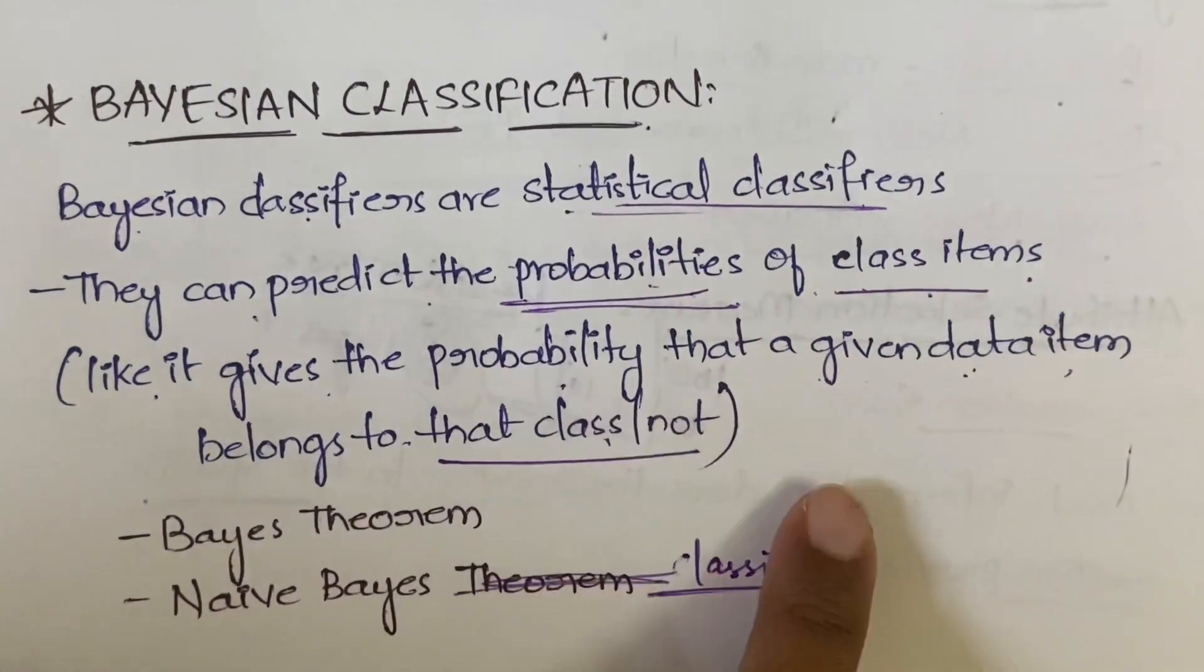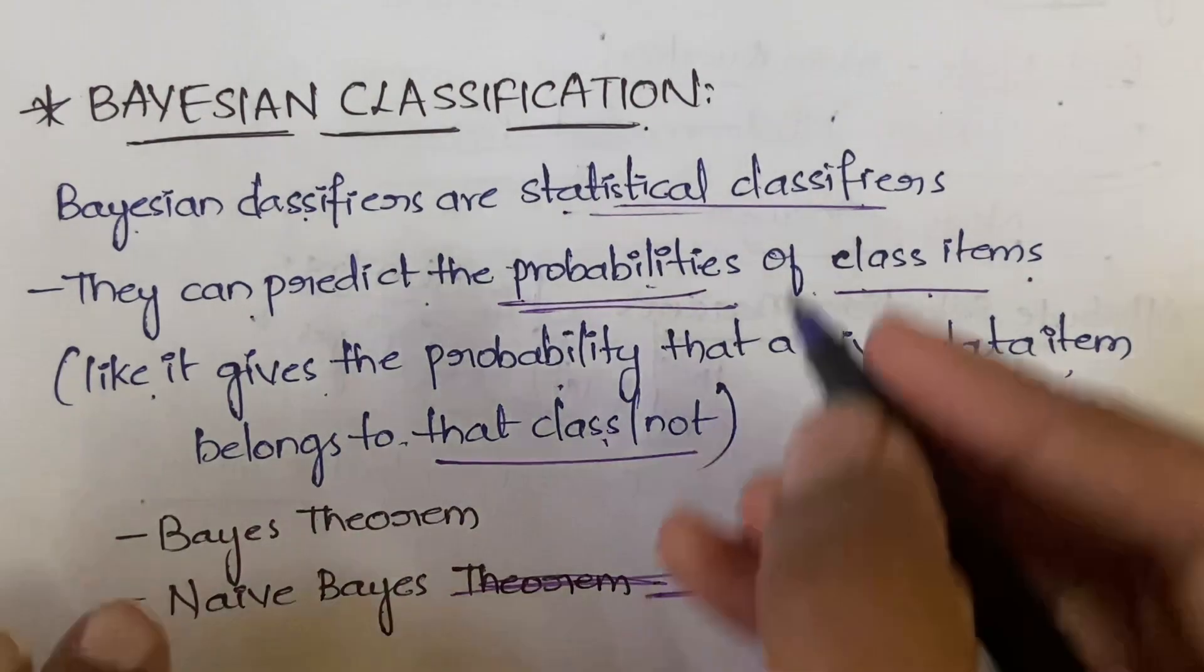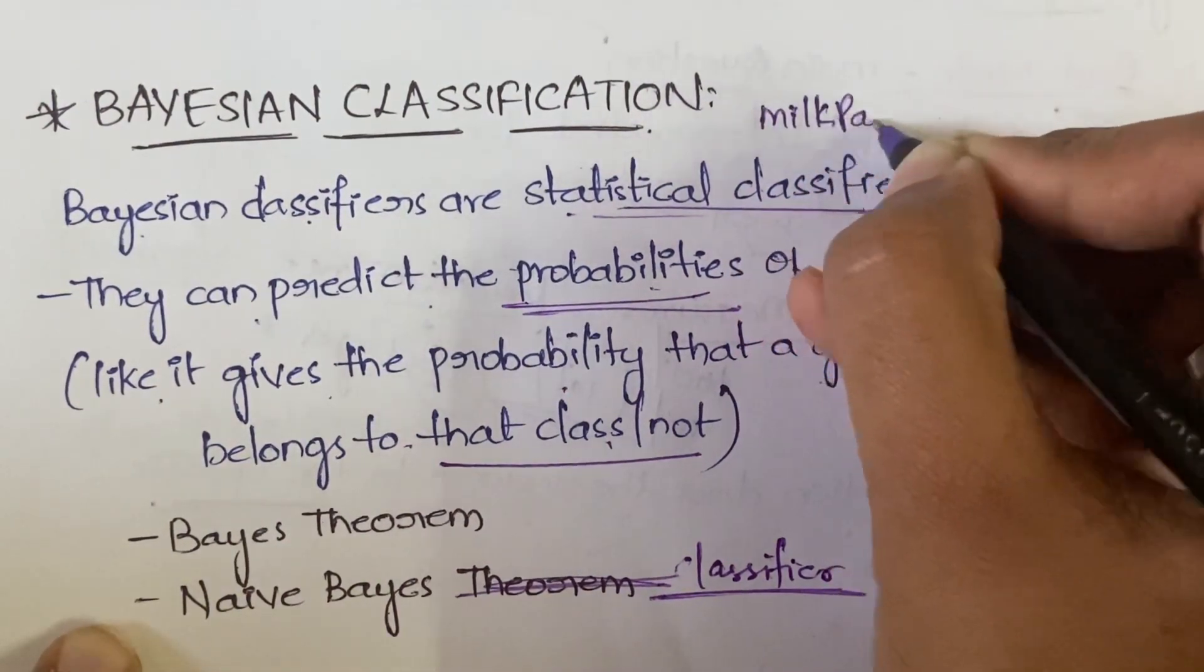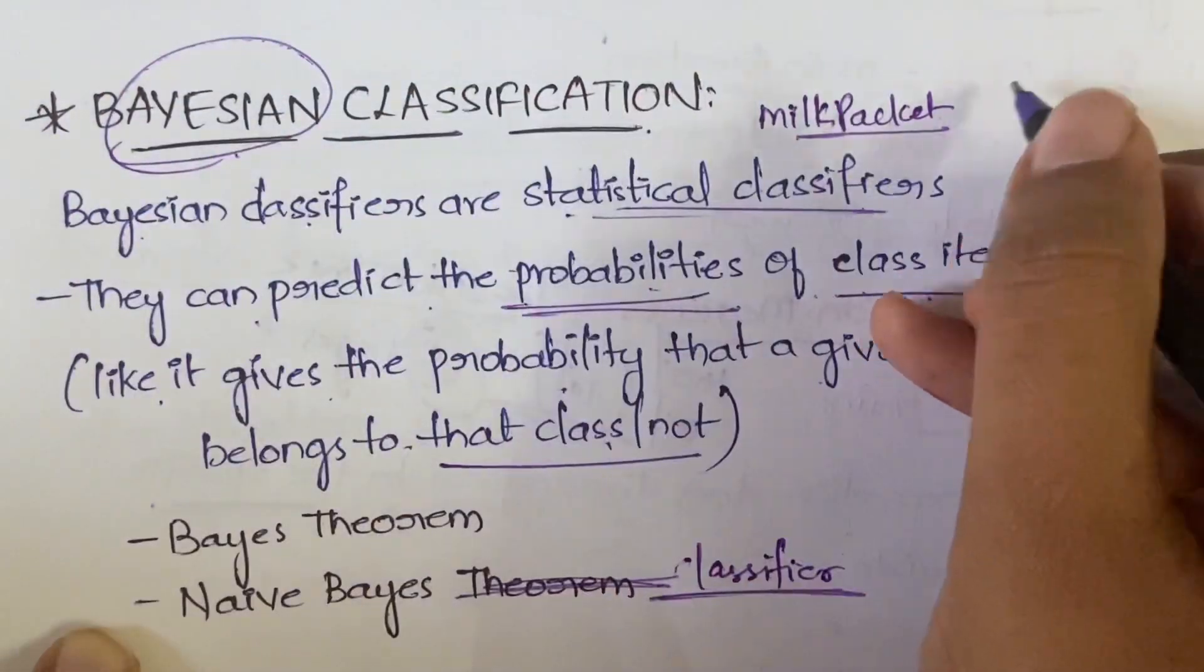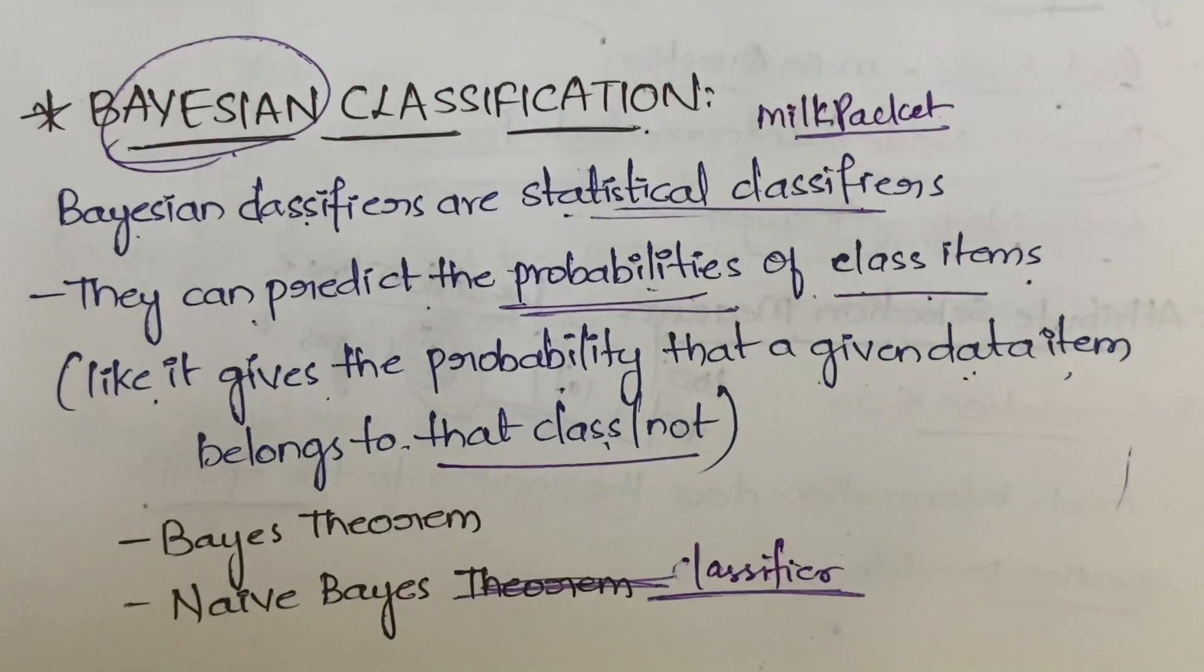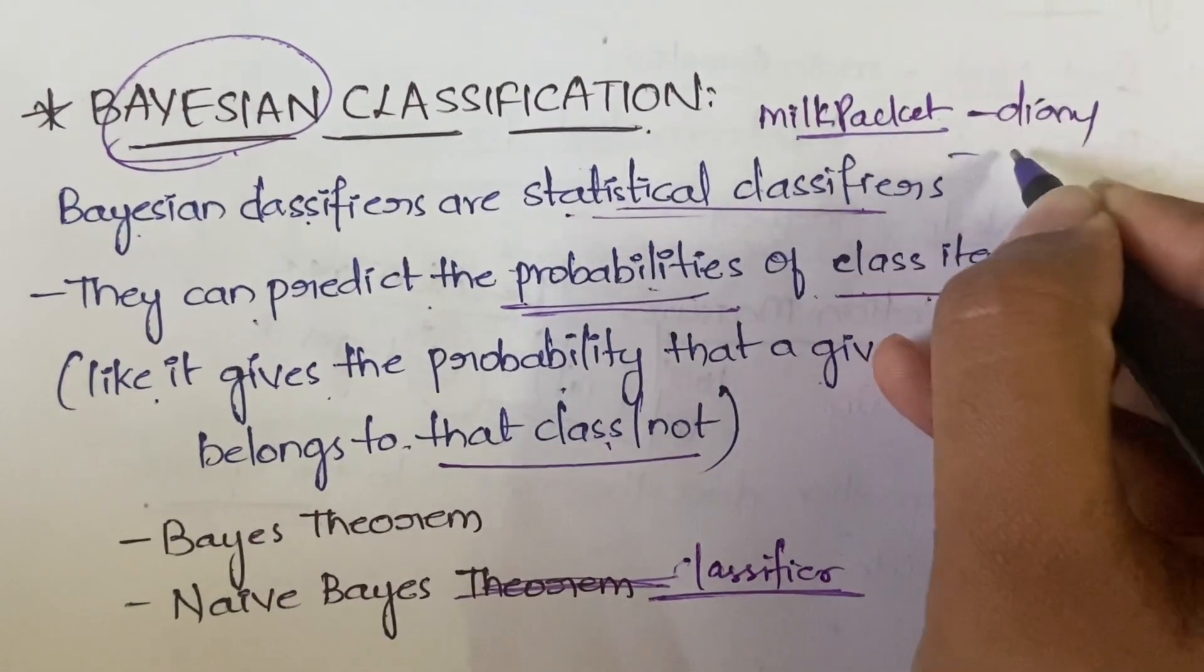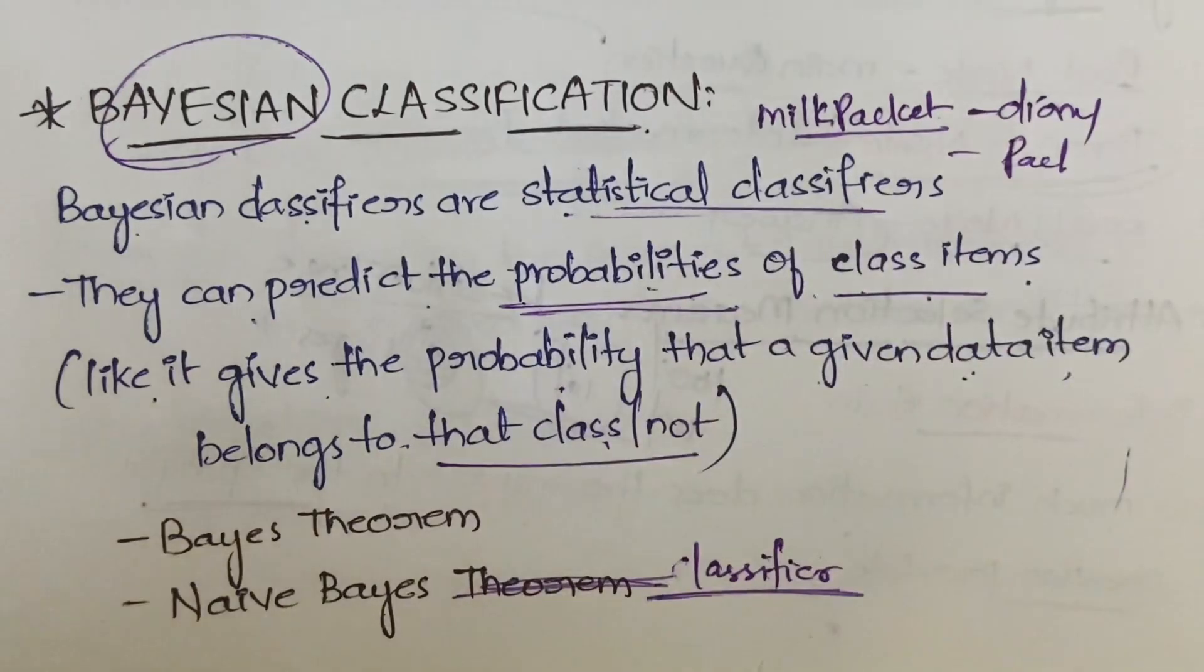For example, let's go back to our milk packet example. If you are having a milk packet, then this Bayesian classification will give you the probability that this milk packet belongs to the dairy class or not—whether it belongs to dairy class or packaged food class, or which class it belongs to.